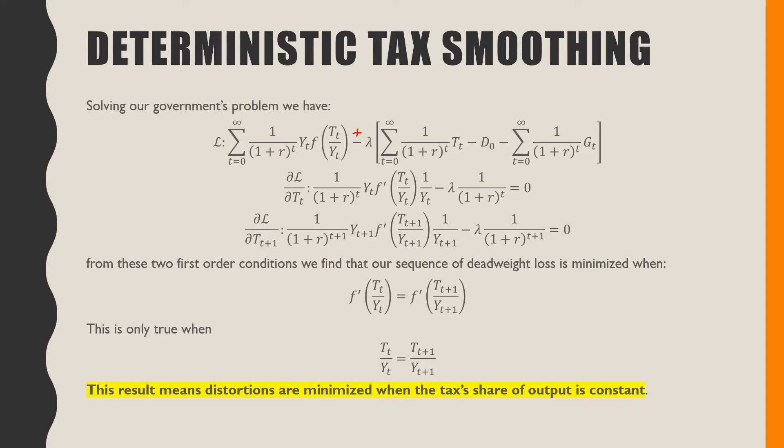Taking our first-order condition with respect to the tax revenue at time t and tax revenue at time t plus one and solving them together, we find that our tax revenue is minimized when our derivative of our distortions with respect to our tax share of output, which is Tt/Yt at time t, is equal to the same thing in the next period. This is only true when the tax share is constant. This result means that distortions are minimized when the tax share of output is constant across periods.